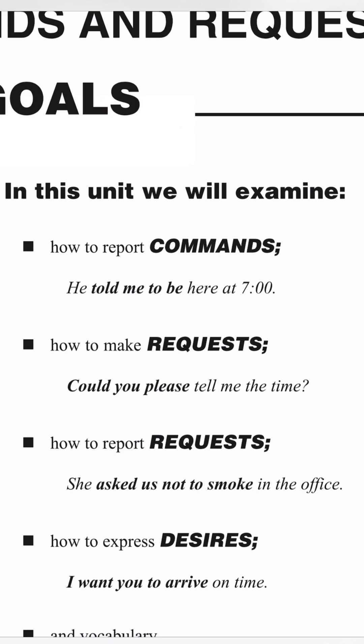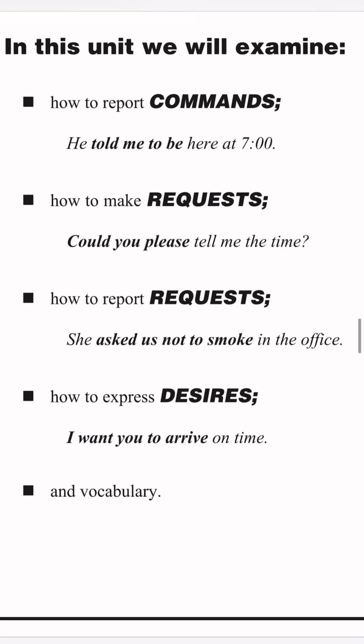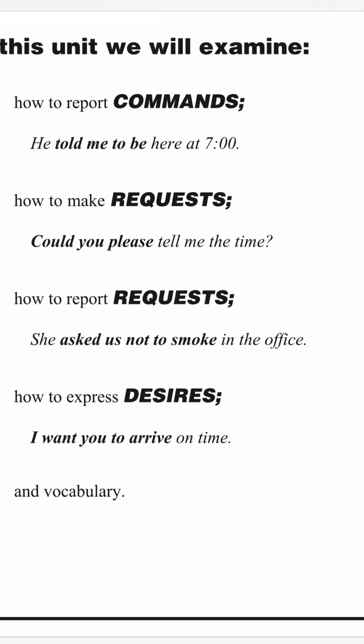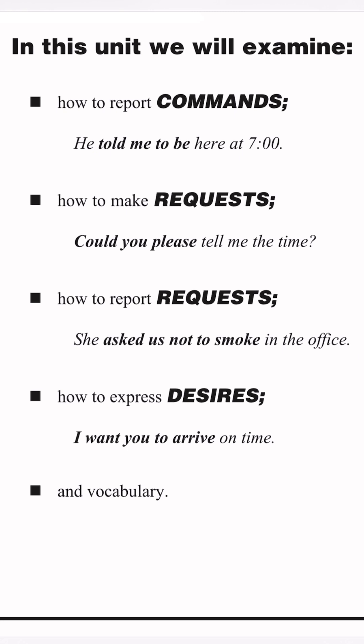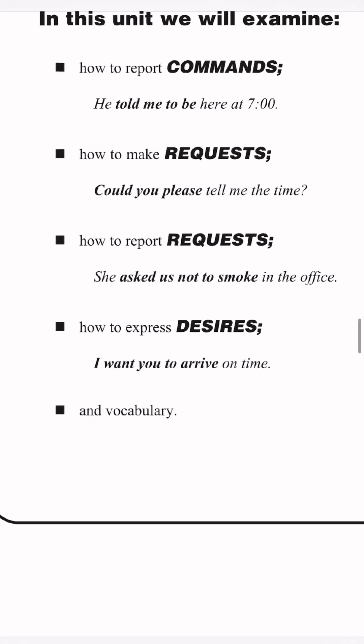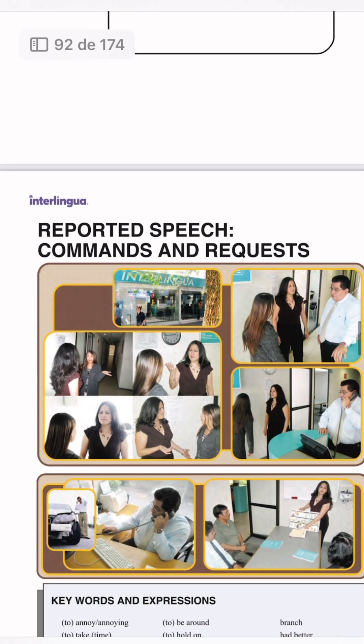Another point: how to make requests. For example: could you please tell me the time? Another point: how to report requests. For example: she asked us not to smoke in the office. How to express desires: I want you to arrive on time. Vocabulary: reported speech, commands and requests.